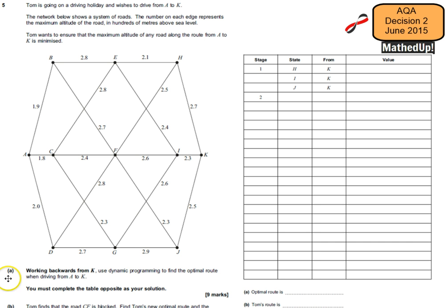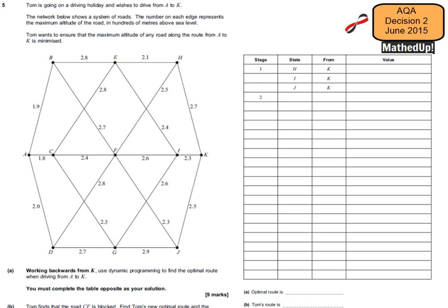Part A says we're working backwards from K and using dynamic programming to find the optimal route when travelling from A to K, using a table. Starting with stage 1 — H, I, and J — that's already been filled in for us. From H, the only place I can go is K, with a maximum altitude of 2.7. From I, the maximum is 2.3. And from J, the maximum to K is 2.5. So if at any point I end up at J, the highest altitude from there is going to be 2.5.